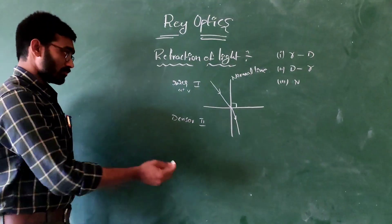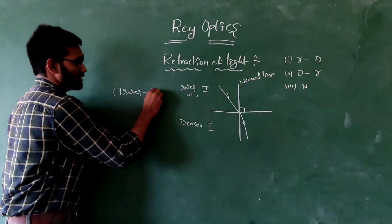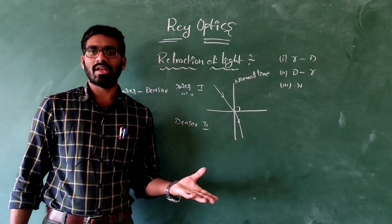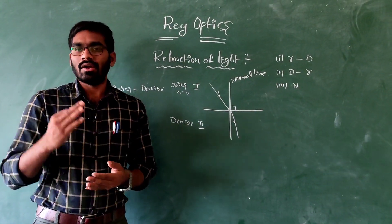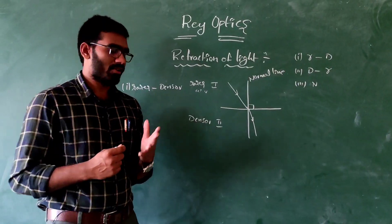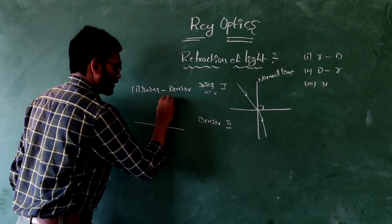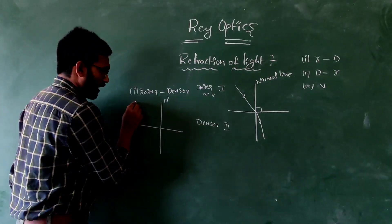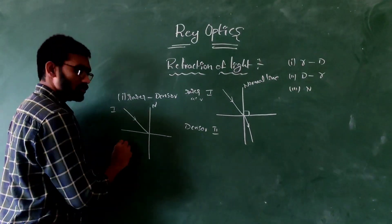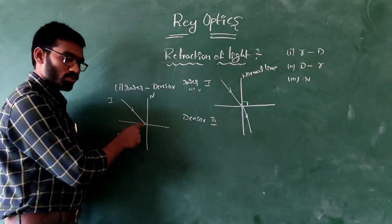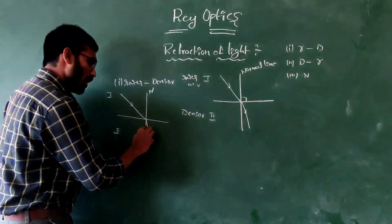First case: the light ray travels from the rarer medium to the denser medium. The light ray passes through the rarer medium to the denser medium. That light ray bends towards the normal. We observe the diagram here — a normal line is drawn, and the light ray passes from the rarer medium to the denser medium. That light ray bends towards the normal.